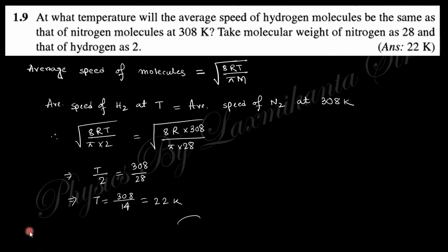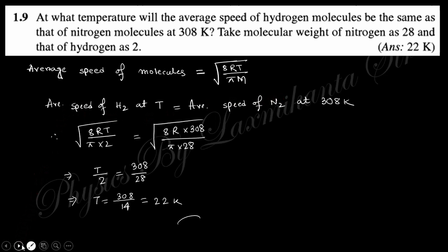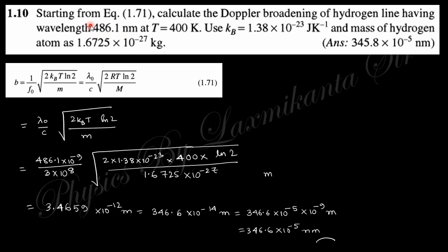Question nine: at what temperature will the average speed of hydrogen molecules equal the average speed of nitrogen molecules at 308 K? Equating the average speed formulas — √(8RT/πM) for both gases — and solving, the required temperature is 22 K.